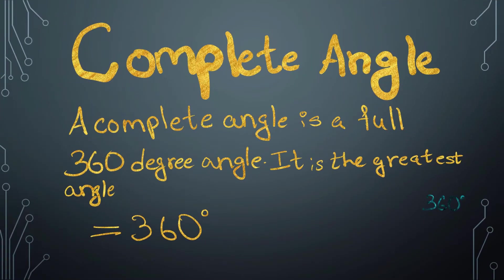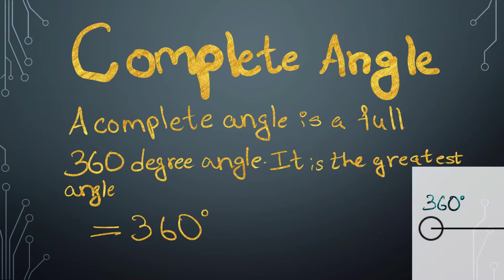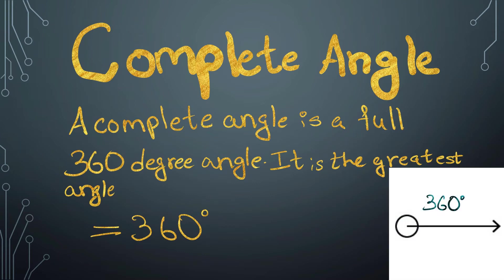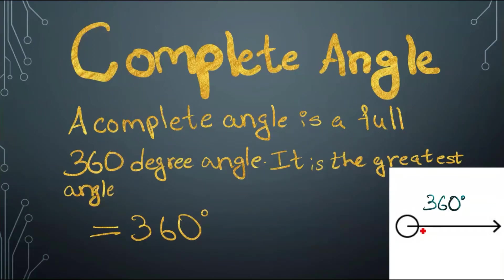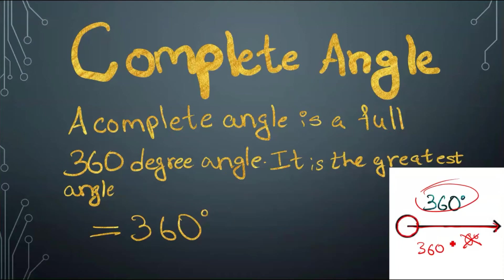Complete Angle. A complete angle is a full 360 degree angle — it is the greatest angle. This angle is equal to 360 degrees. Now this might look like zero degrees, but actually it is not. See, it makes a full circle over here, indicating that it is 360 degrees. A full circle equals 360 degrees.